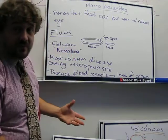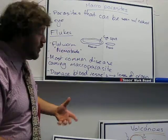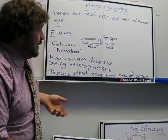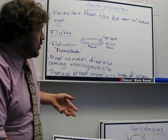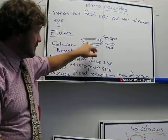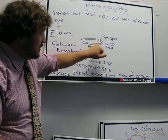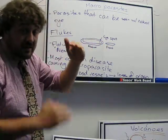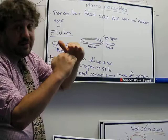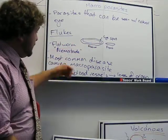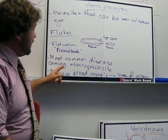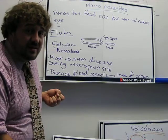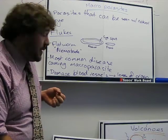We're basically going to start with two types, both of which are a type of flatworm. We've got the flukes, which are flatworms called nematodes. They literally look like this — they are a flatworm and they've usually got eye spots on the top. These are the most common disease-causing macro parasites.